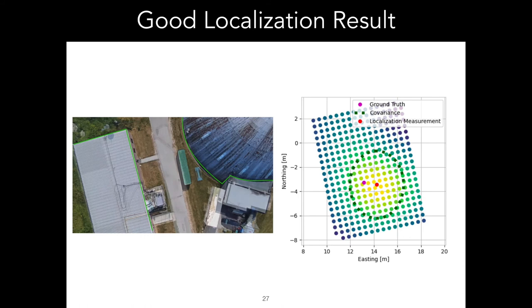Here is a specific example of a particularly good localization result we were able to achieve. The left-hand side shows an overlay of the Google Earth image and a live image. The edges of the buildings in the two images have been correctly aligned and is highlighted by the green borders. On the right, we are visualizing the weights of the reference images, along with the localization estimate in red, covariance in green, and ground truth in magenta. Here, the covariance is within our acceptance threshold.